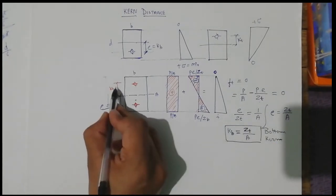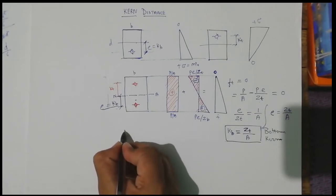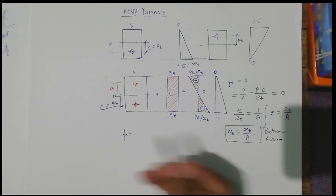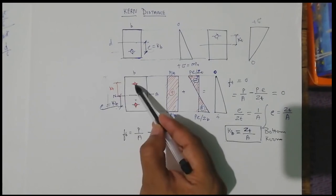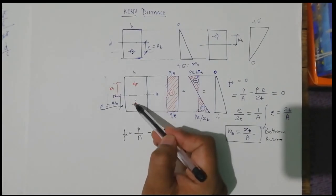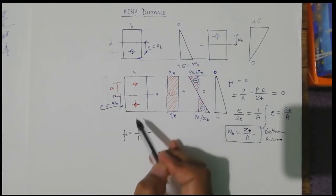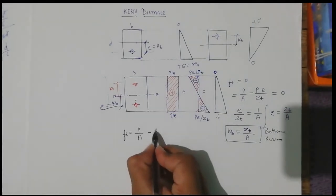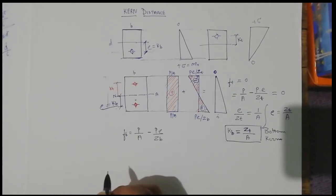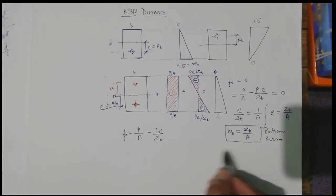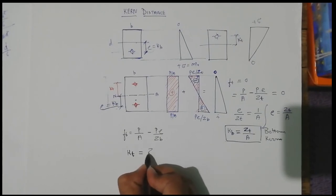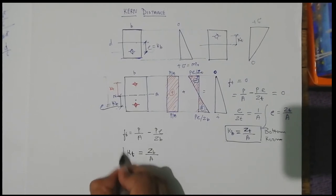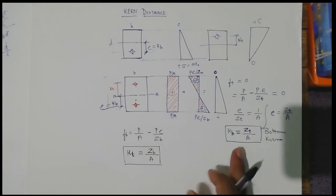The equation for bottom stresses when the prestress is applied above the neutral axis: FB equals P/A minus P·E/ZB, set equal to zero. The bending stress at the bottom fiber is tensile when the force is above the neutral axis. From this equation we get the top kern distance KT equals ZB divided by A, where ZB is the bottom section modulus.